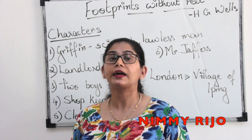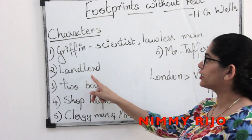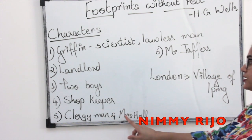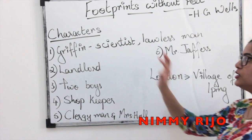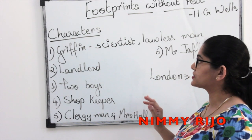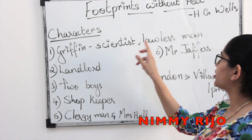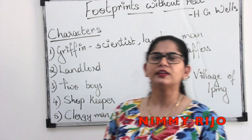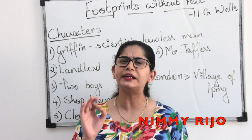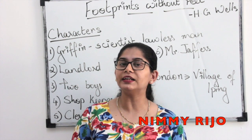Now we look into the characters of the story. The characters are: Griffin, Landlord, Two Boys, Shopkeeper, Clergy Man, his wife Mrs. Hall, and Mr. Jaffers. These are basically the characters of the story. Another thing what you have to know is basically Griffin — Griffin is a scientist, and also a lawless person. He is also a brilliant scientist, not just a normal scientist.